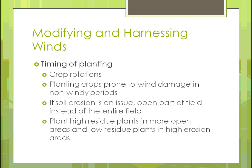The timing of planting matters — you can do crop rotations, and if plants are prone to wind damage, plant them during non-windy periods of the season. If soil erosion is an issue, only open up part of a field at a time. Instead of plowing everything, use modern planters that open and close right away, leaving residue in place and reducing soil erosion. Placing high-residue plants in more open areas and low-residue plants in higher-erosion areas also helps protect the soil.